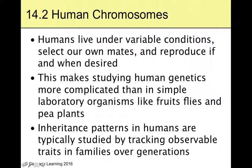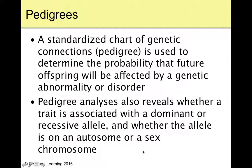Generally, we have to track observable traits over generations, and we call that a pedigree. You can do pedigrees with dogs, horses, humans, or whatever — it's a chart of genetic connections used to determine the probability that future offspring will be affected by a genetic abnormality or disorder. It maps out males and females, their phenotypes, and reveals whether traits are associated with dominant or recessive alleles and whether the alleles are on an autosome or a sex chromosome. I'll show you a pedigree in class — it's good to be familiar with and practice.